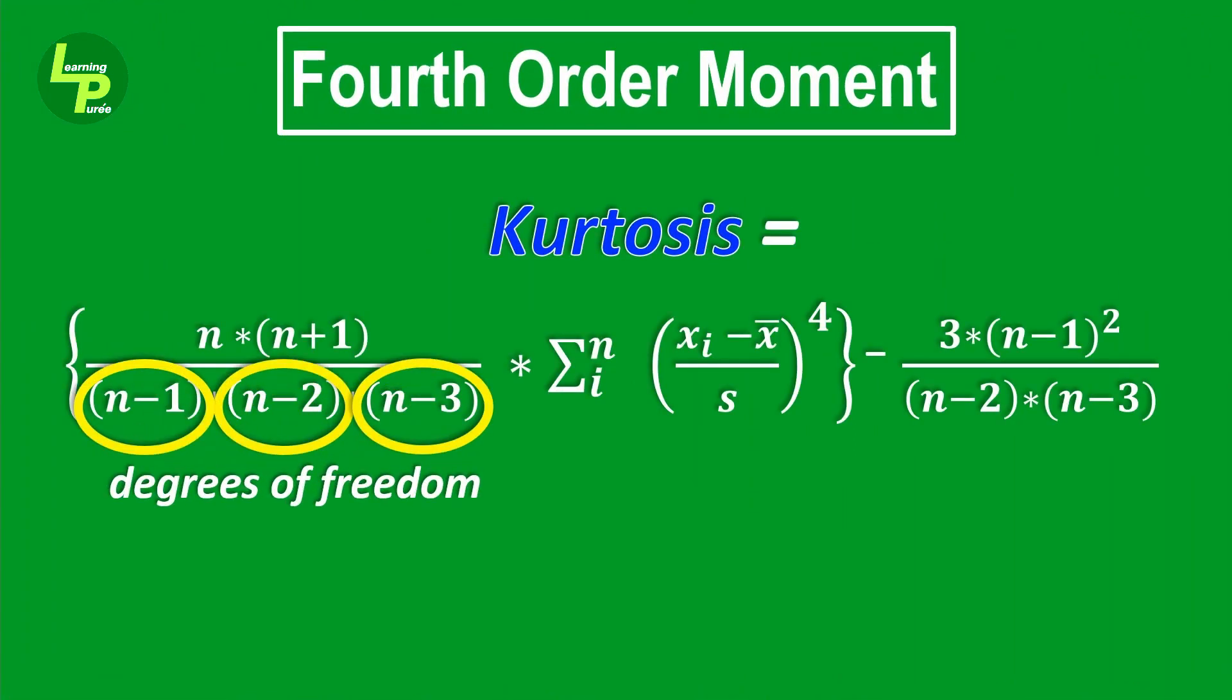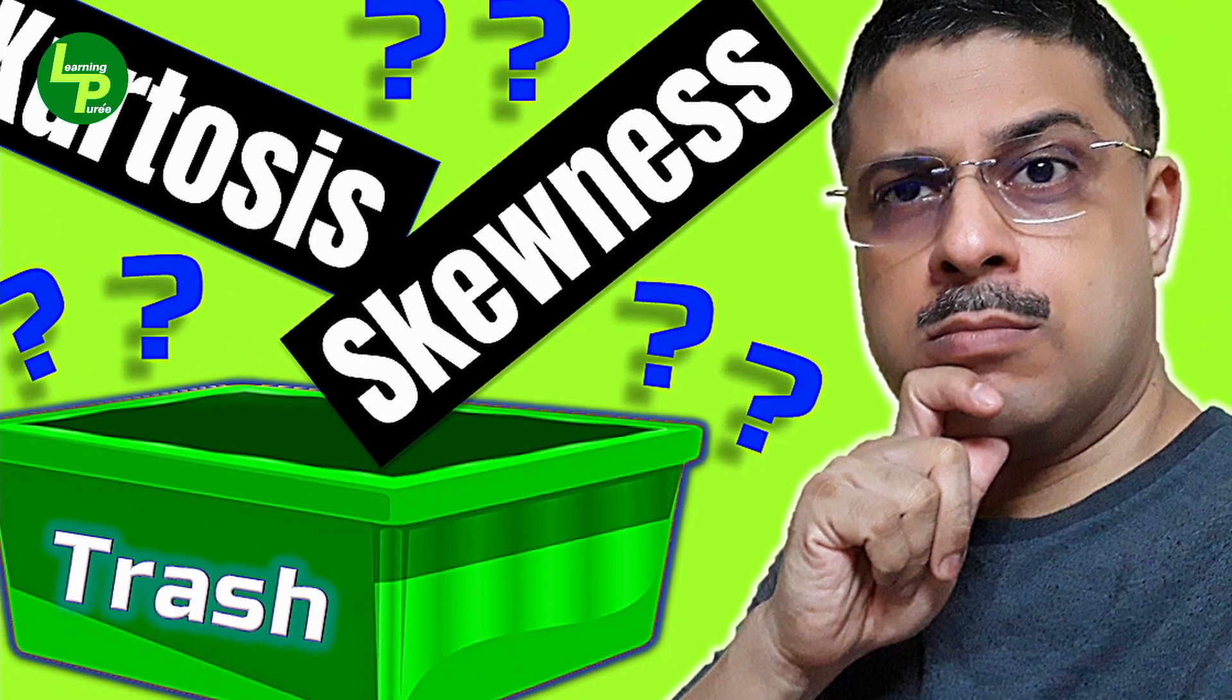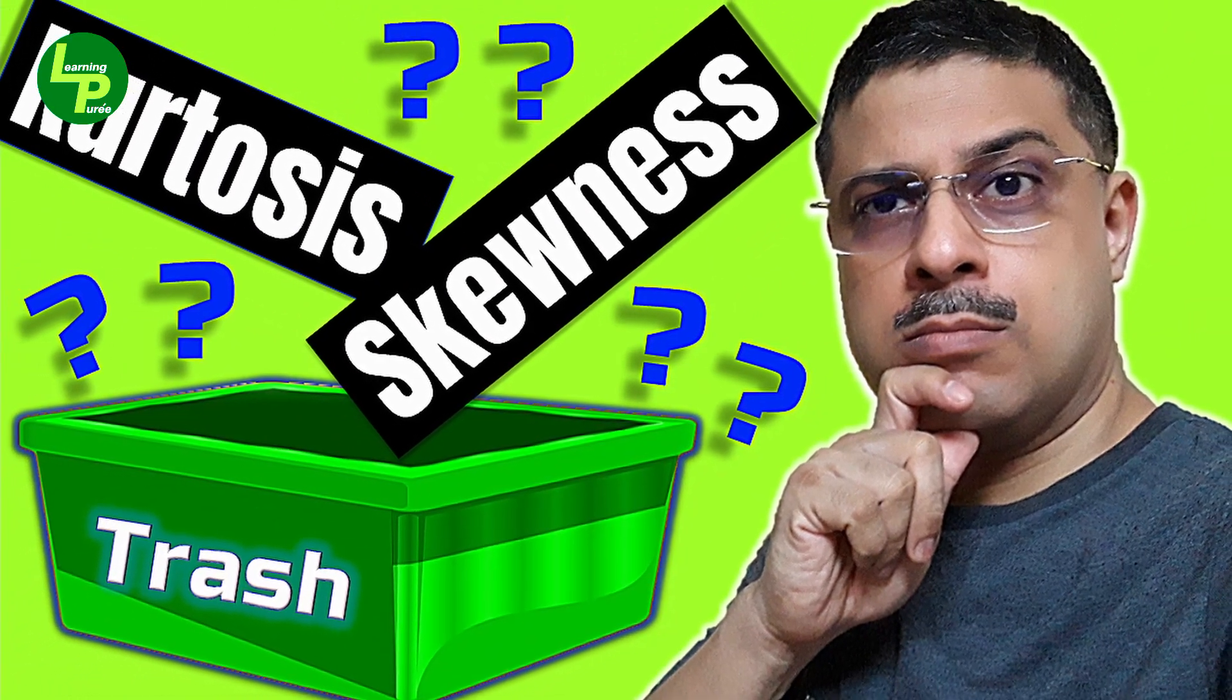Again, n-3 is a result of loss of one more degree of freedom in the estimation. I have shared and explained both these equations in this earlier video.